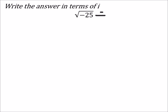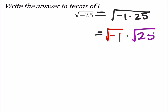So this negative 25 would break up into negative 1 times 25. And I could take the square root of that. I could break this up even further so that I have the square root of negative 1 times the square root of 25, like this.